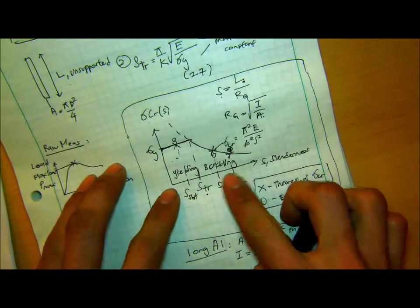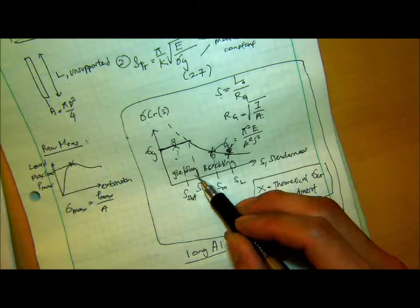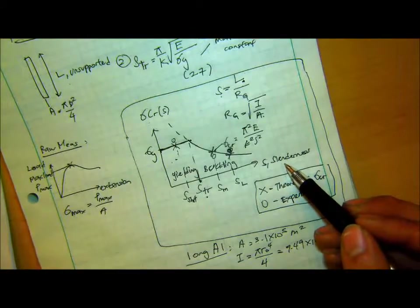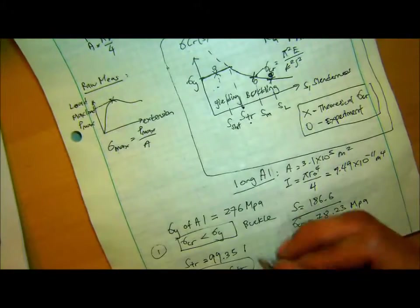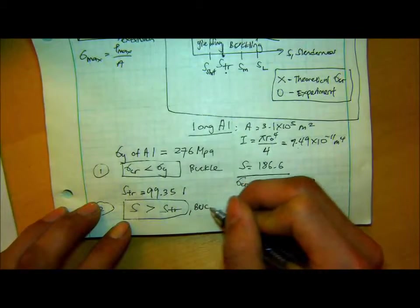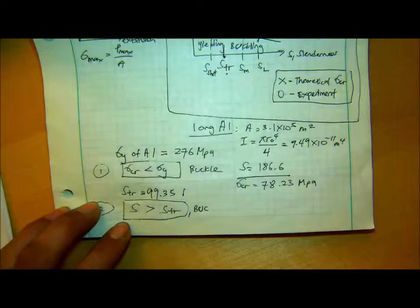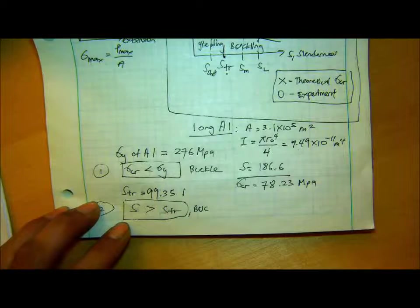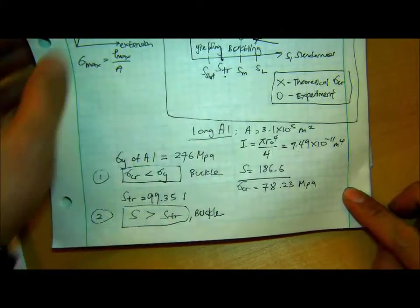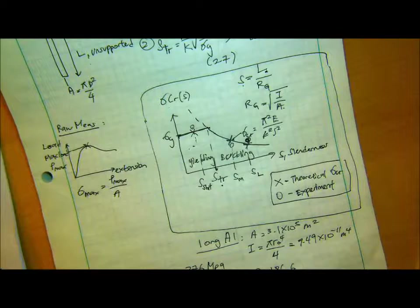So if you look at here, our S is on the right side of STR according to this sigma critical plot. So immediately, these are the two ways we can tell where we're predicting the long column is going to buckle or yielding theoretically. So yeah, that's it. And you do similar steps for the other samples and materials.